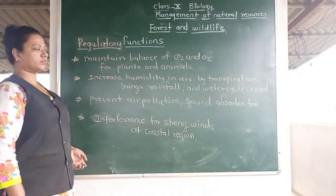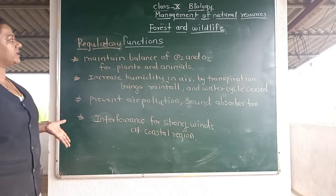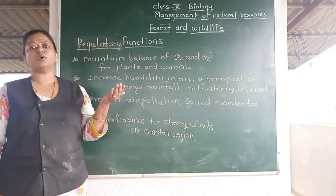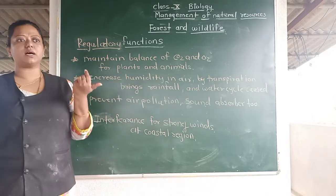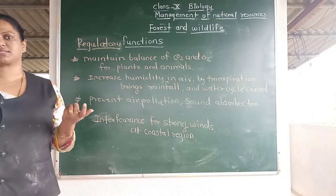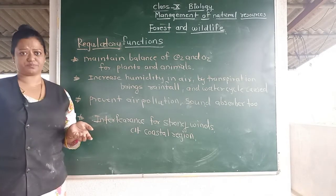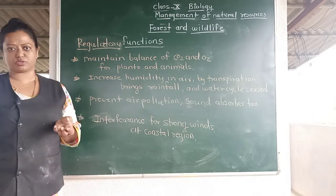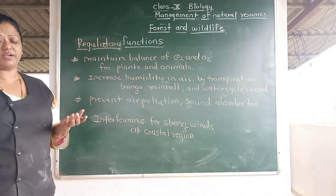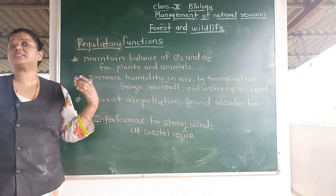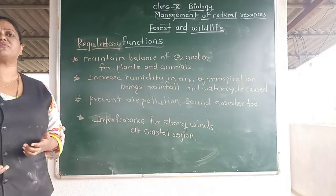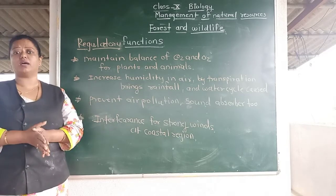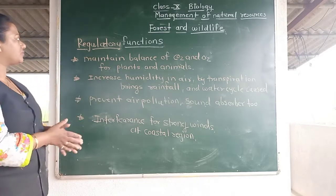Now for the regulatory functions of the forest. First, maintaining the balance of carbon dioxide and oxygen — we require oxygen and plants require carbon dioxide, so forests maintain this balance. Next, forests increase humidity because of transpiration — excess water is released through stomata into the surroundings, increasing humidity, which brings rainfall and balances the water cycle.